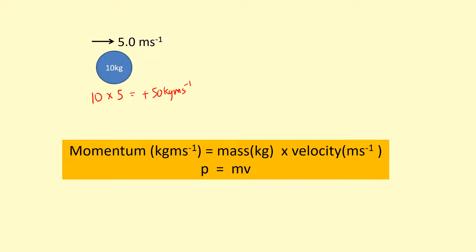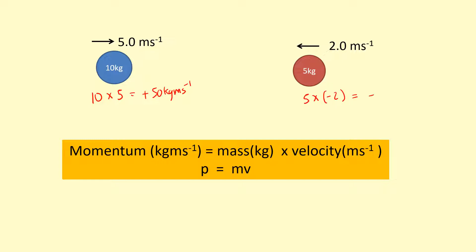This is important because momentum is a vector. For example, this ball here would have a momentum of 5 times minus 2 because it's going in the opposite direction. I'm going to define left as negative, so this will have a momentum of minus 10 kilogram meters per second.